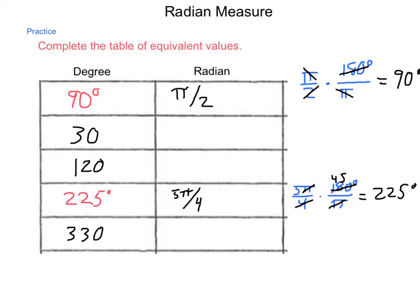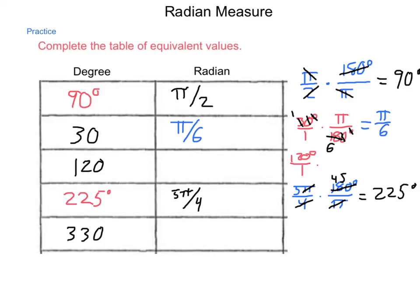What about starting with degrees? For 30 degrees, I multiply 30 degrees over 1 by π over 180 degrees. The degrees simplify, and dividing both by 10, 30 divided by 18 simplifies into 1/6. So we get π/6 radians. For 120 degrees: 120 over 1 times π over 180 degrees. The degrees and multiples of 10 simplify, giving us 12/18, which simplifies to 2/3. So 120 degrees is 2π/3 radians.